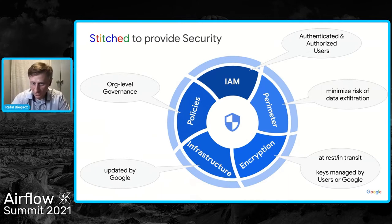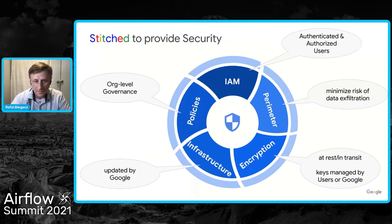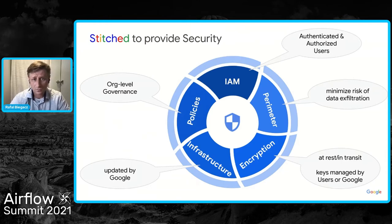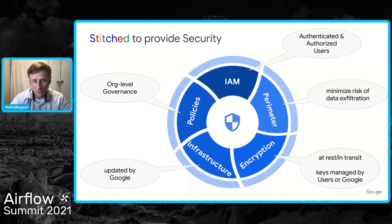The managed infrastructure — database, storage, and compute layers — means you don't need to worry about updating operating systems, applying patches, or fixing security vulnerabilities. For bigger enterprise installations, you can use a common set of rules across all Airflow instances. Thanks to organizational-level policies, you can achieve governance unification not just at the product level in GCP, but at the whole organizational level.